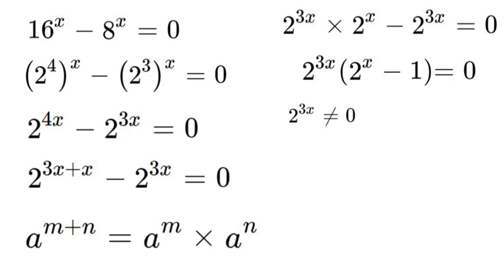So that being said, let's solve for 0 for the other side. So we have 2 to the power of x minus 1 is equal to 0. We can add 1 to both sides so 2 to the power of x is equal to 1.